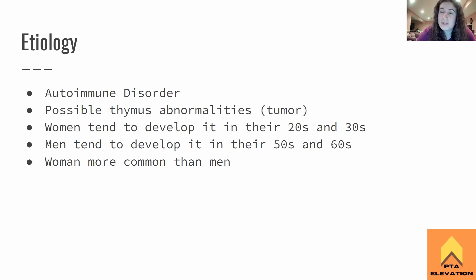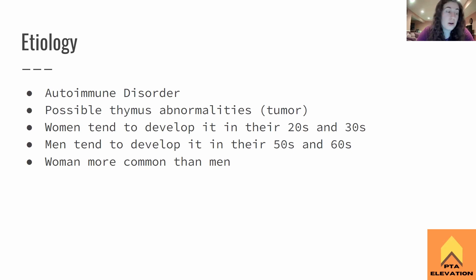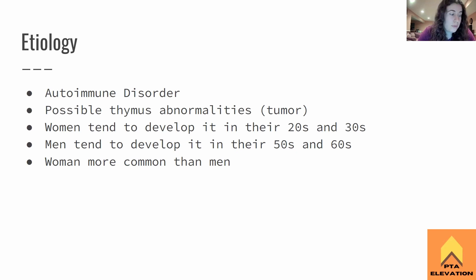If women are going to develop myasthenia gravis, it will happen somewhere in their twenties and thirties most of the time. If men are developing this, it will happen in their fifties and sixties most of the time — and from the very few patients I've had with myasthenia gravis, this pretty much holds true. One lady was about 25, and the other individual I treated was a 60-year-old man. Also, women are more commonly diagnosed with this than men.